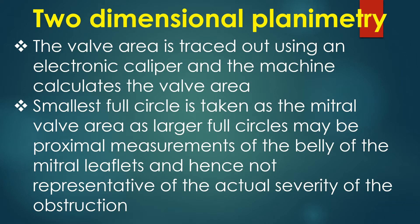In two-dimensional planimetry, the valve area is traced out using an electronic caliper and the machine calculates the valve area. The smallest full circle is taken as the mitral valve area, as larger full circles may be proximal measurements of the belly of the mitral leaflets and hence not representative of the actual severity of obstruction.